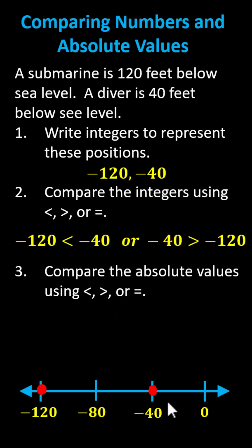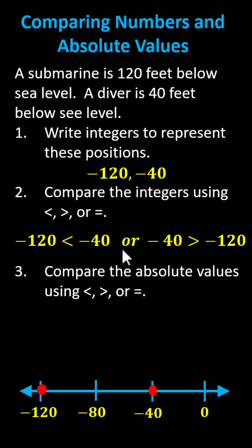But also, because negative 40 is to the right of negative 120, we can also state that negative 40 is greater than negative 120. These two inequalities are equivalent. Notice that in both inequalities, the inequality symbol points toward negative 120 and opens toward negative 40.